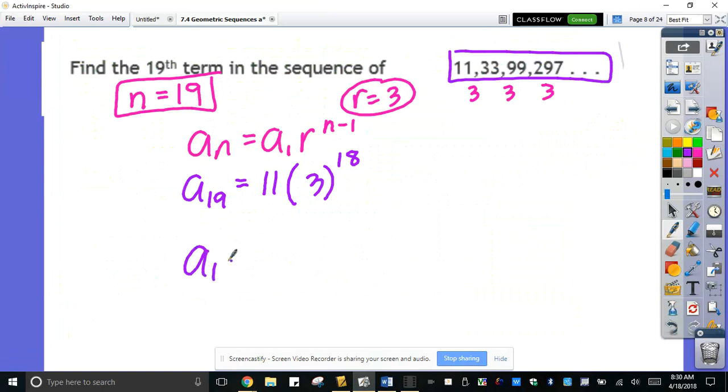So 3 to the 18 is some big number times 11. So it means that the 19th number on this sequence, if we keep going over here, 42,616,253,79. There you go.